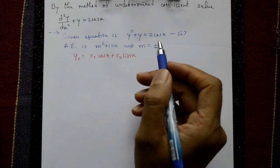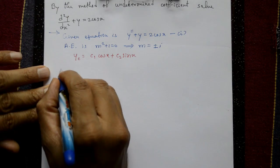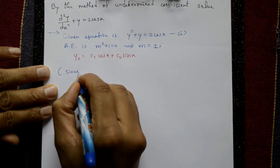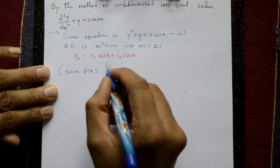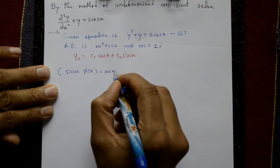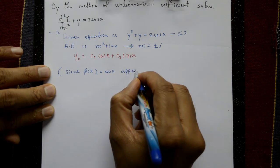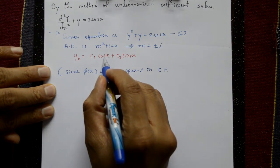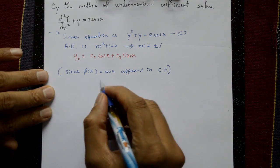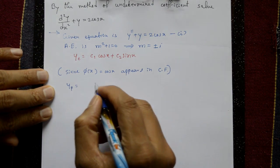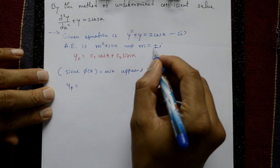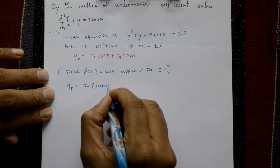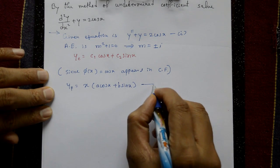The roots are complex: m = ±i. The complementary function is yc = c₁cos(x) + c₂sin(x). Now observe: φ(x) = cos(x) appears in the complementary function. Since cos(x) appears in yc, we multiply by x and assume yp = x(a cos x + b sin x). This is equation number two.